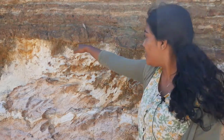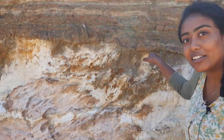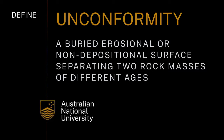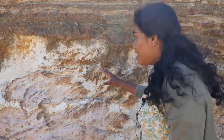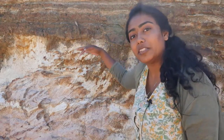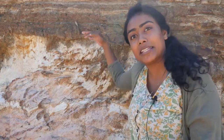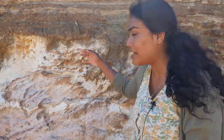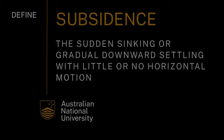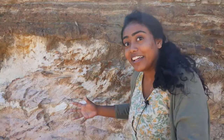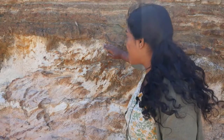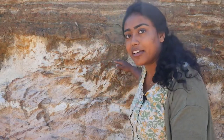And here we actually have an unconformity. So what happened here was that this material was deposited first, it was buried by more material, buried by more sediments that came on top of it, and potentially some subsidence was going on as well while that was occurring. This would have been lithified, lifted above sea level, and then eroded to create this wavy surface here — the unconformity.